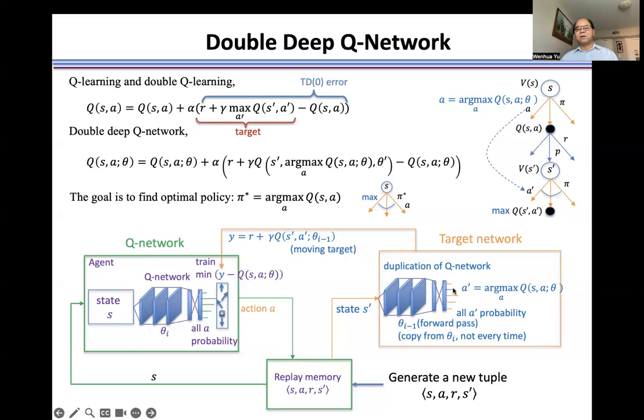And here, how can we select the Q in the target? Not maximum Q. Instead, we find the Q corresponding to the a we selected in the Q-network.